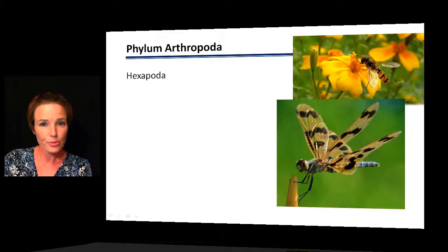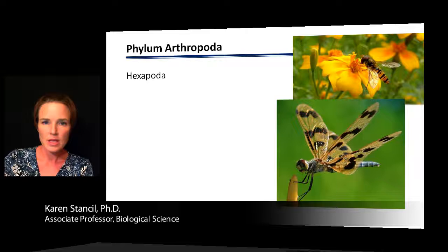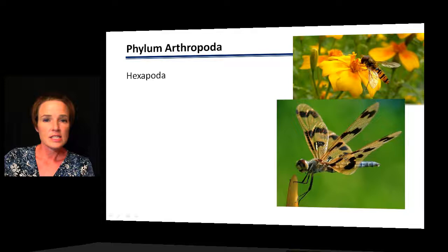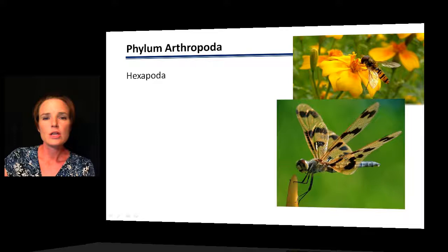The largest of all the arthropod groups is the insects, and this makes up a subphylum called Hexapoda. It's known from fossil evidence that insects have been around since the Devonian period, so that's over 400 million years ago. Insects initially evolved and we've seen several waves of adaptive radiation. One of the things that first gave rise to many different insect groups was the evolution of wings, which provided a great advantage and resulted in a lot of diversity.